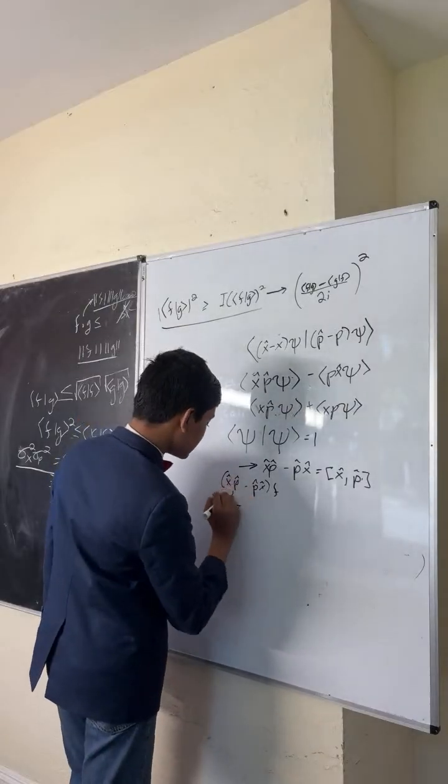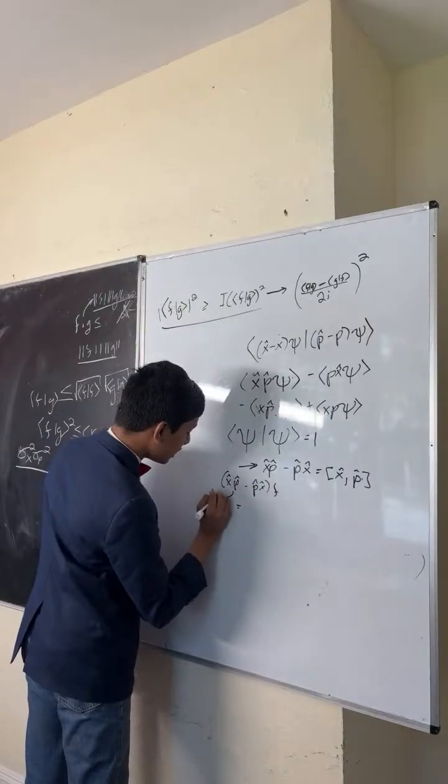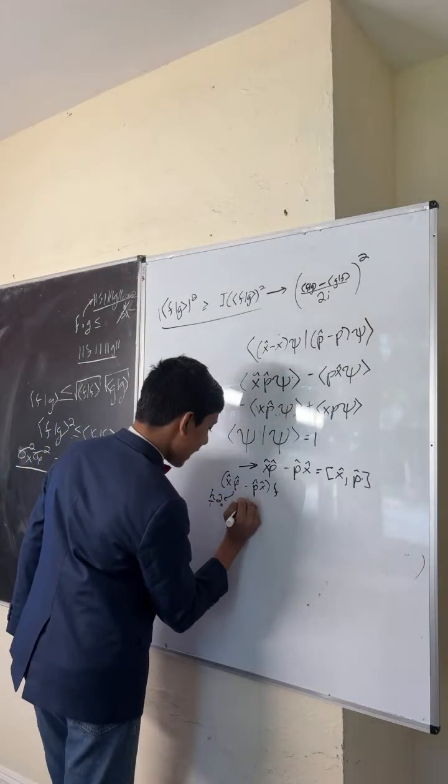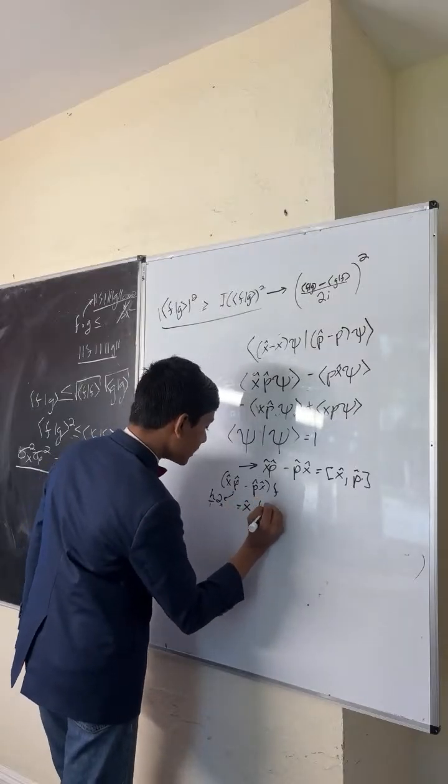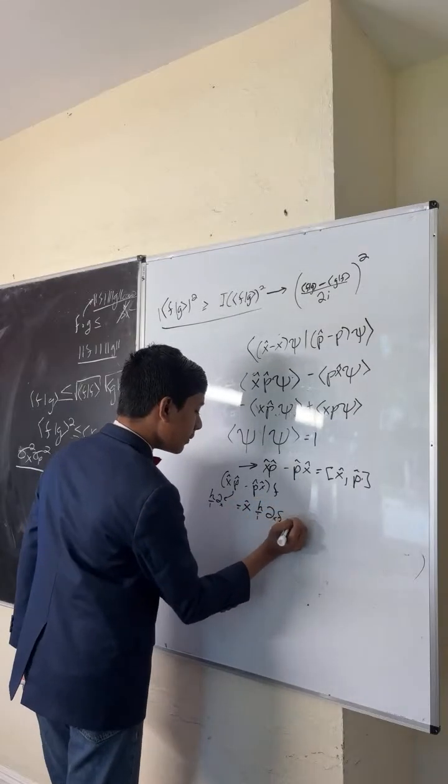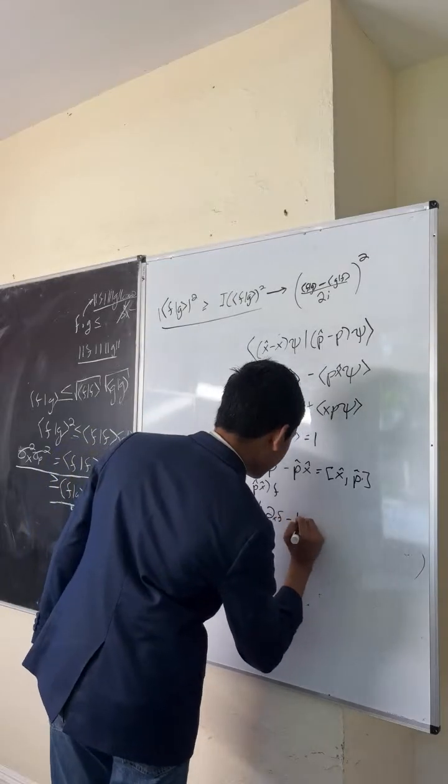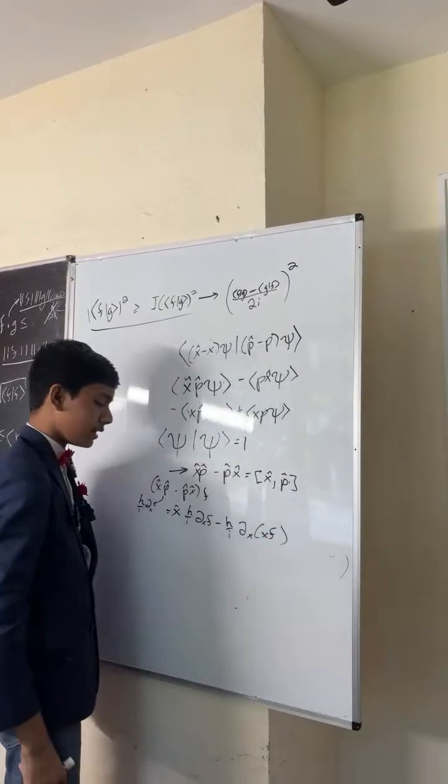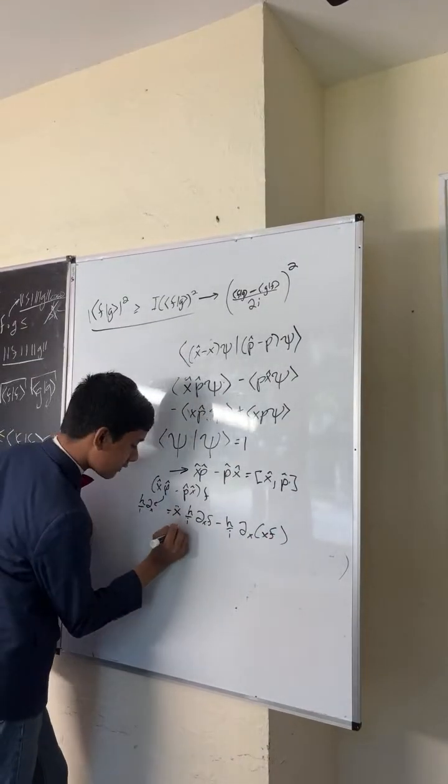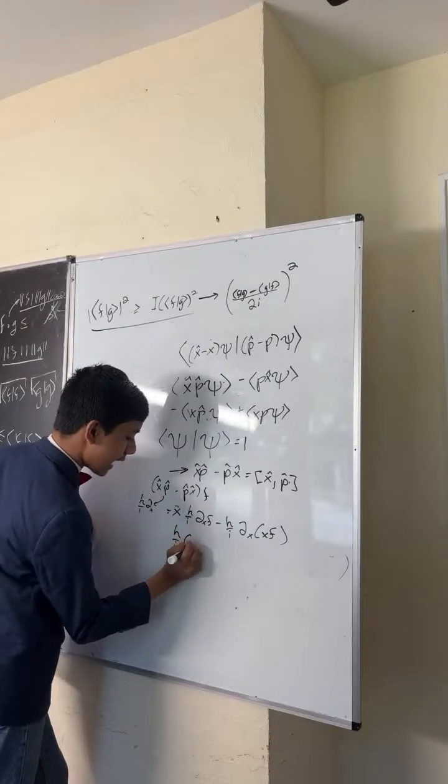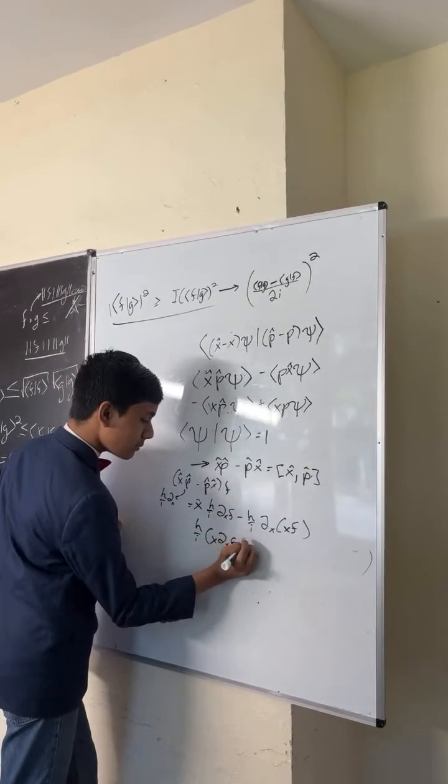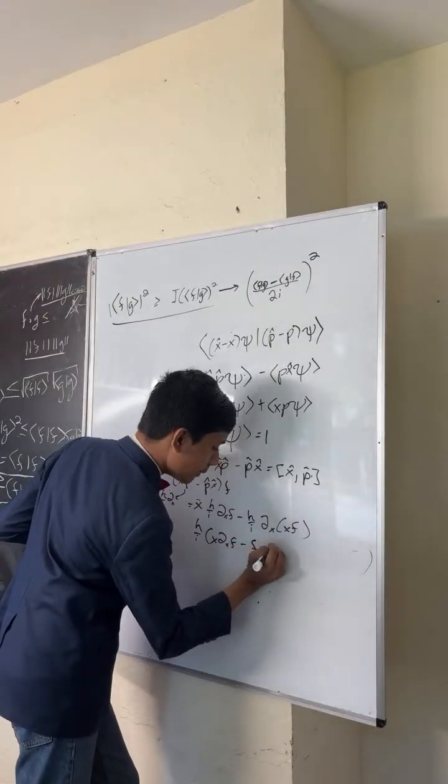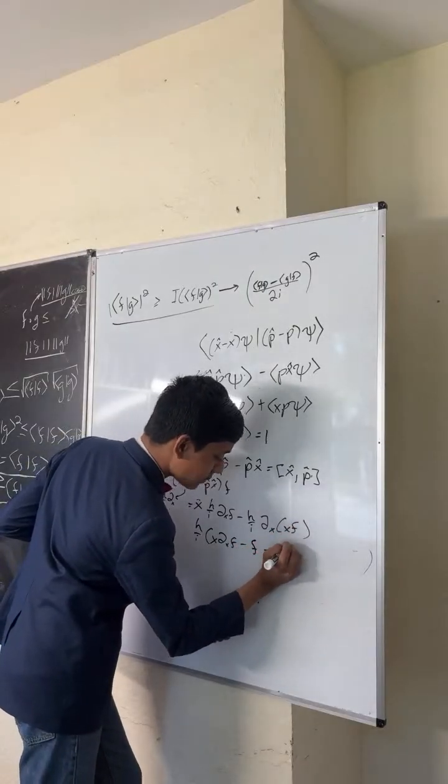Well, we get since this is h-bar over i partial x, this is going to give us x hat h-bar over i partial x f minus h-bar over i partial x of x f. And what happens here? Well, you factor out the h-bar over i and you get x partial x f minus, well, this is just the product rule, so you get f minus x partial x f.